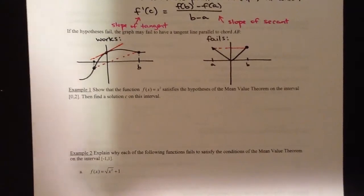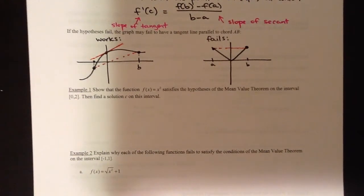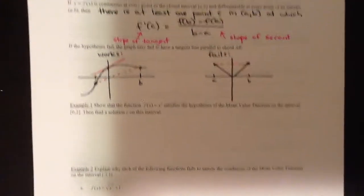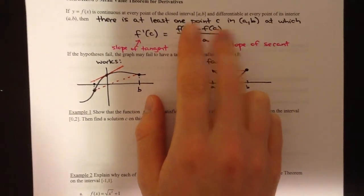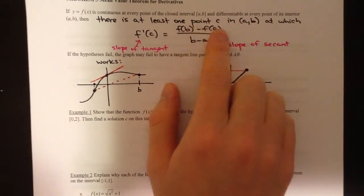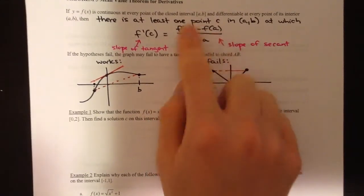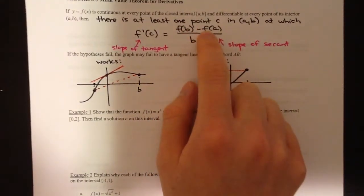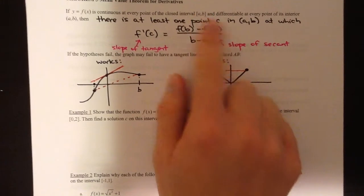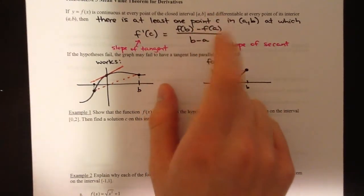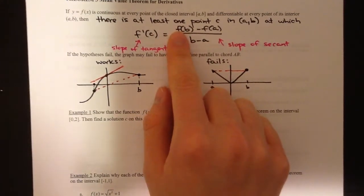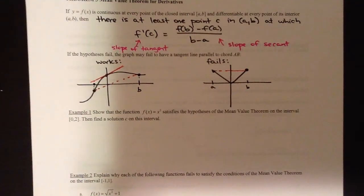I want to talk about Rolle's theorem, which is what we did in the last lesson. Rolle's theorem is just one specific instance of the mean value theorem — the mean value theorem is the more generalized one. In Rolle's theorem, we started by saying f(a) equals f(b), so the secant line had a slope of zero. We were saying we could find a tangent line with a slope of zero. That was Rolle's theorem — a specific instance of the mean value theorem.